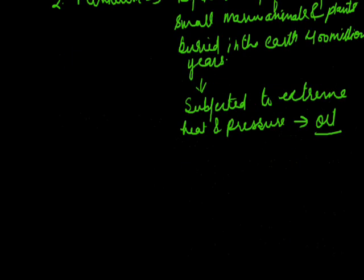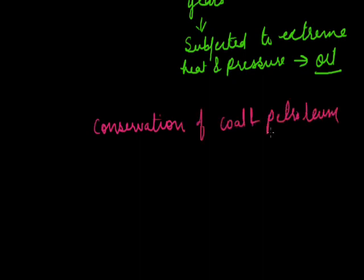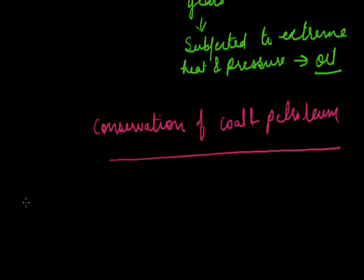The next topic is conservation of coal and petroleum — how we can conserve them. Since they are non-renewable energy sources, they cannot be replaced in a short period of time once they get exhausted, so we should conserve and protect them. Conservation means more efficient use with regard to economic, social and environmental cost and benefits, which results in higher efficiency, minimization of wastage and protection of the environment.